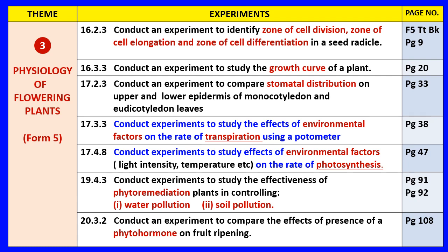The next list of experiments comes from the Form 5 textbook and they are more related to plants. Some of them are quite long and are unlikely to be asked in the practical Paper 3, but if experiments are modified in an innovative way, certain questions could still be asked. Chapter 16 — which is actually Chapter 1 of the Form 5 syllabus — includes conducting experiments to identify the zone of cell division, zone of cell elongation, and zone of cell differentiation in a seed radicle.